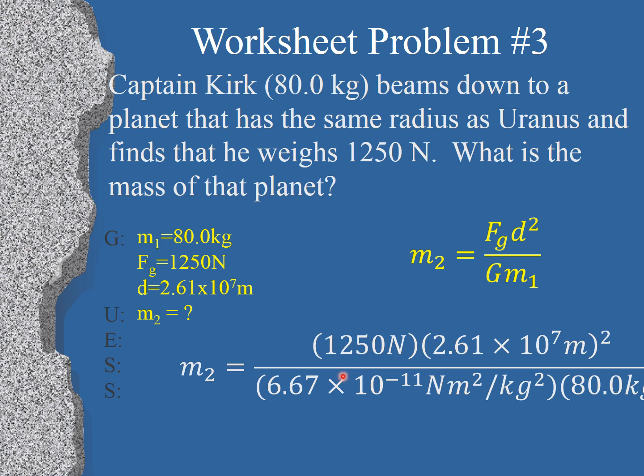We substitute all of this in and we have 1,250 times 2.61 times 10 to the 7 meters. And then don't forget to square that. We're going to divide by 6.67. And remember to hit the second E button. Sign change, 11. And now look at this guy, 80 kilograms on the bottom. Do you think we times it? No. Divide by, it's on the bottom. If you multiply, you're going to get the wrong answer. Divide by 80, since it's on the bottom. And when you're all done, you should get 1.60 times 10 to the 26 kilograms. If you've got a number that's a whole lot bigger than that, then you multiplied by 80 instead of divide. Remember, if it's on the bottom, hit the divide button.